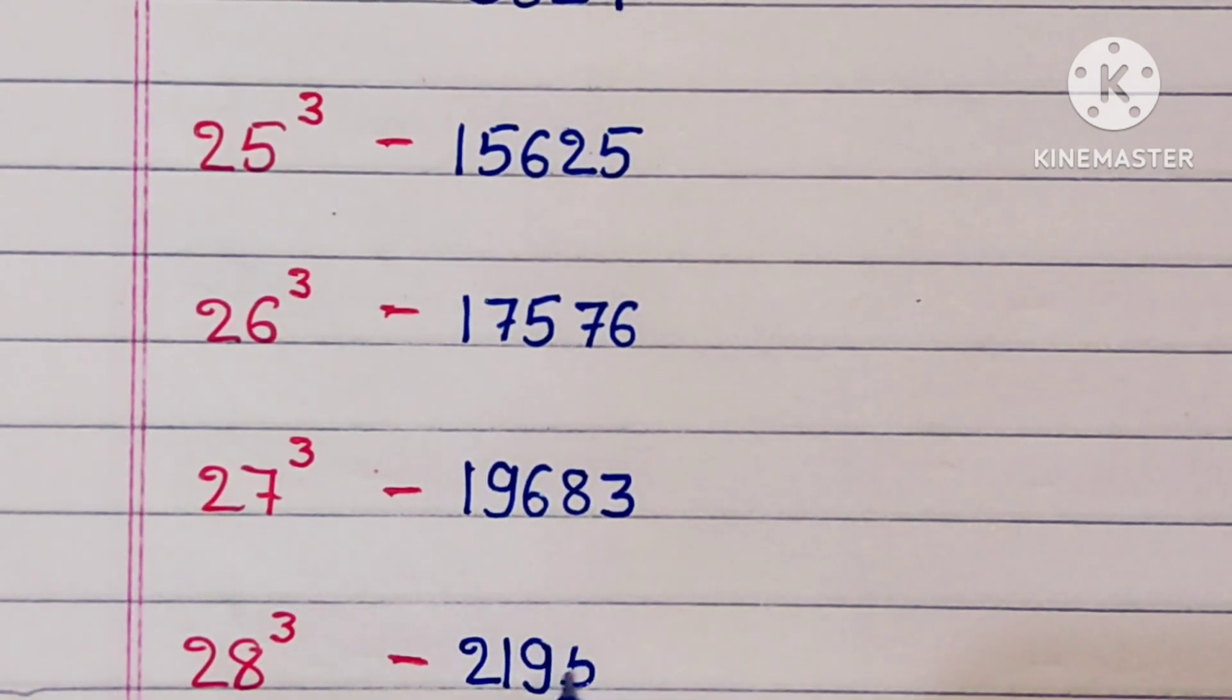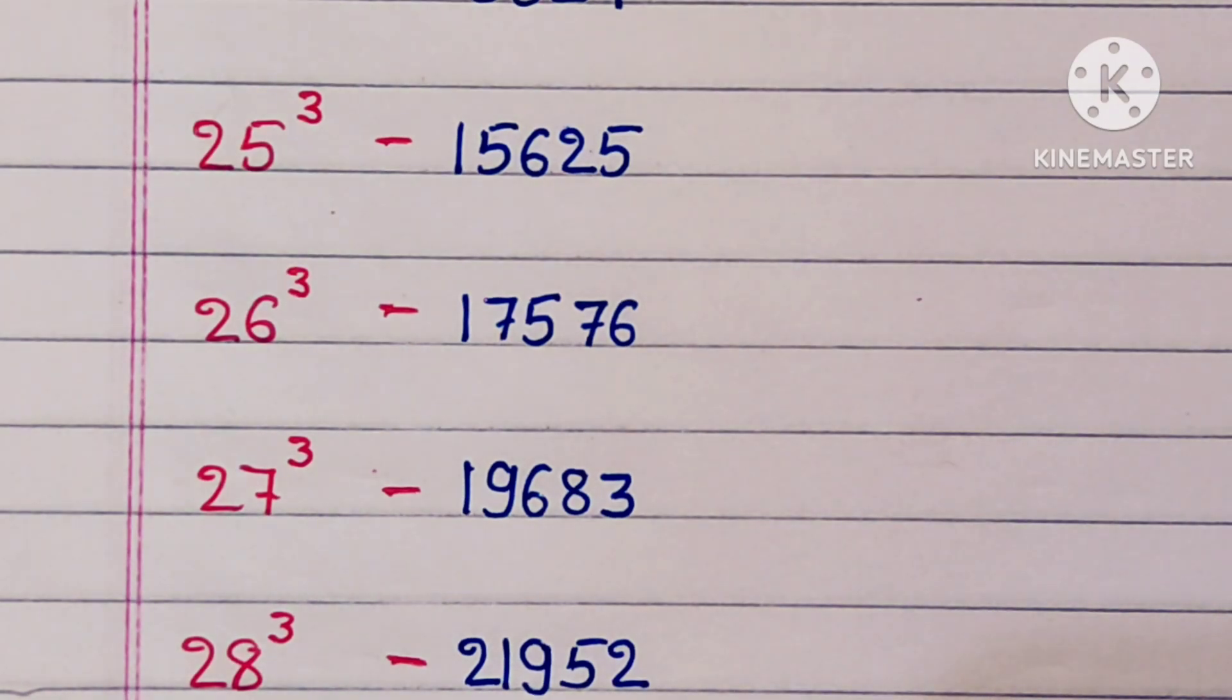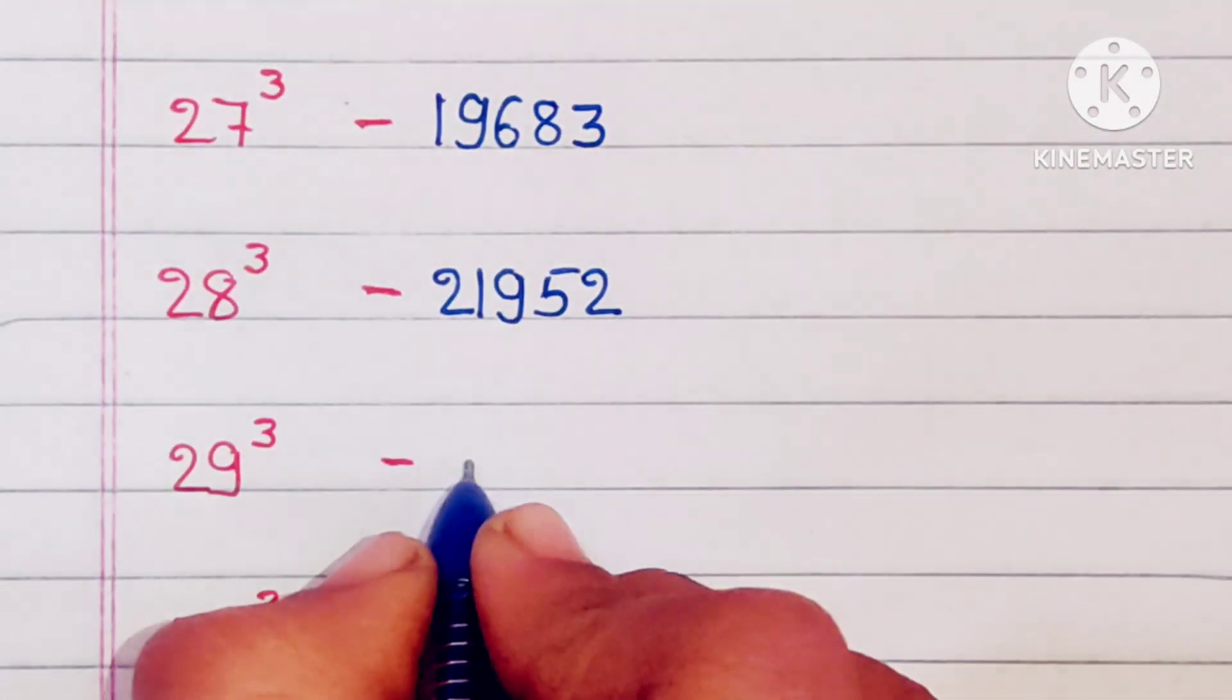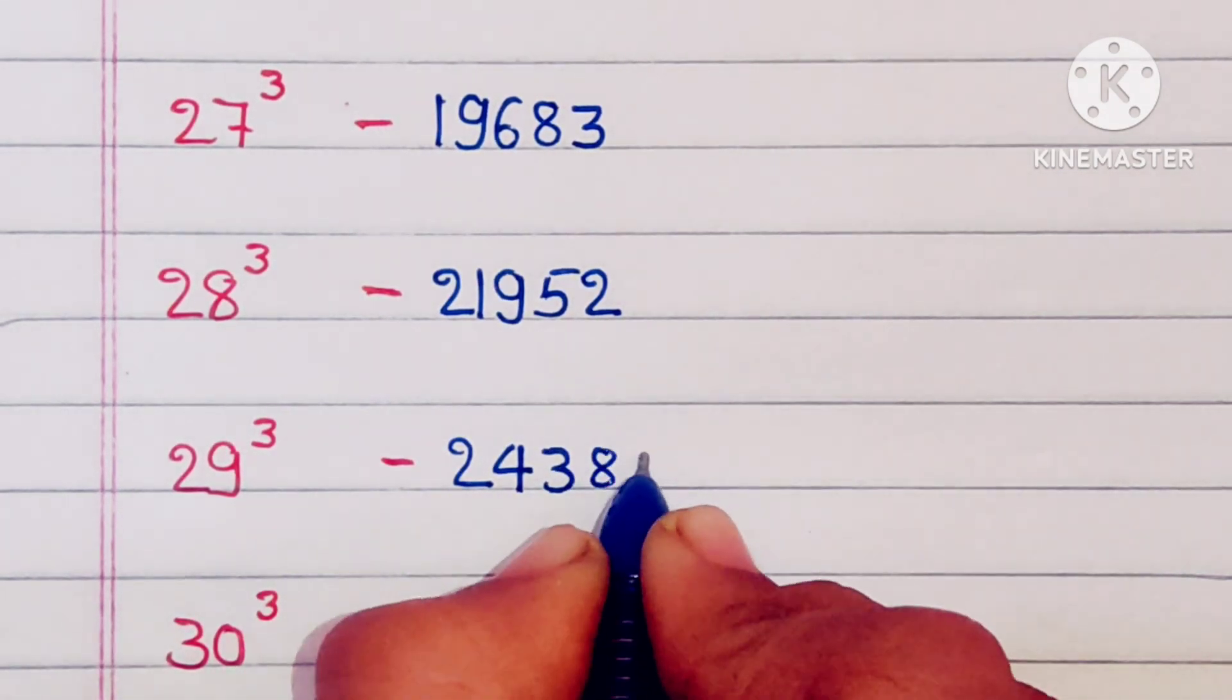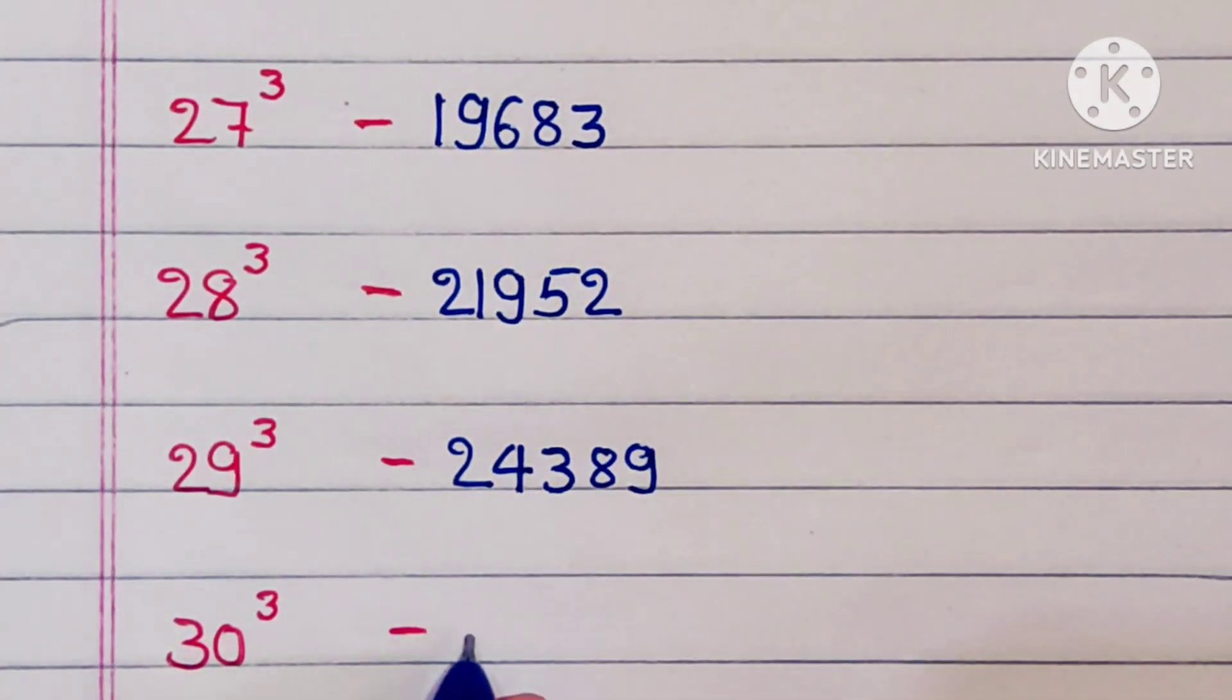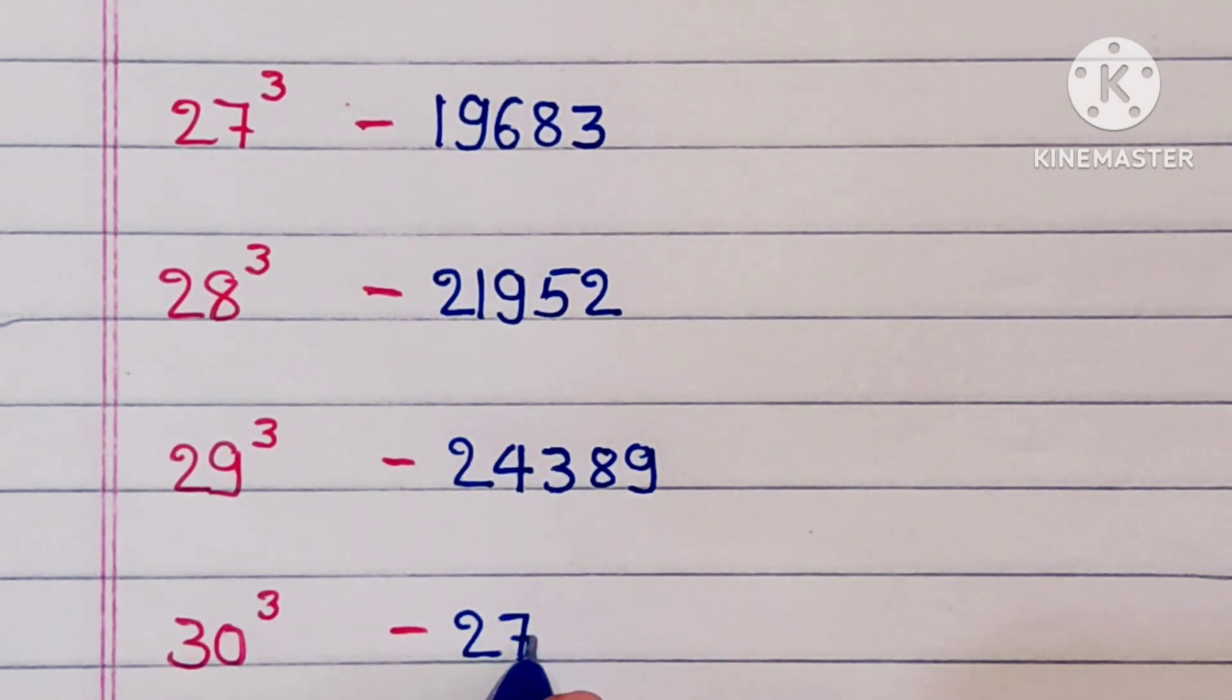28 cube is 21952, 29 cube is 24389, 30 cube is 27000.